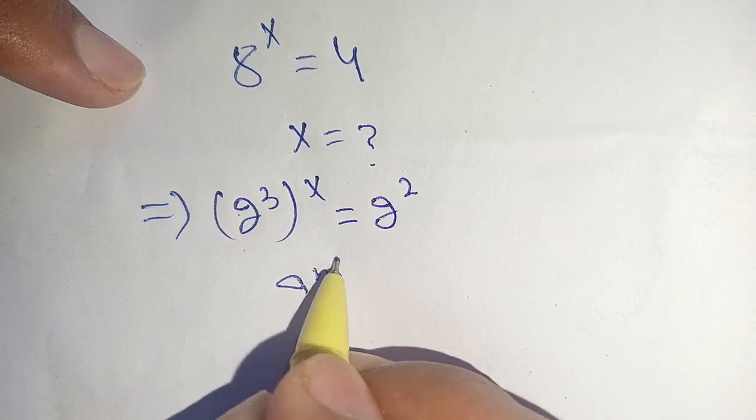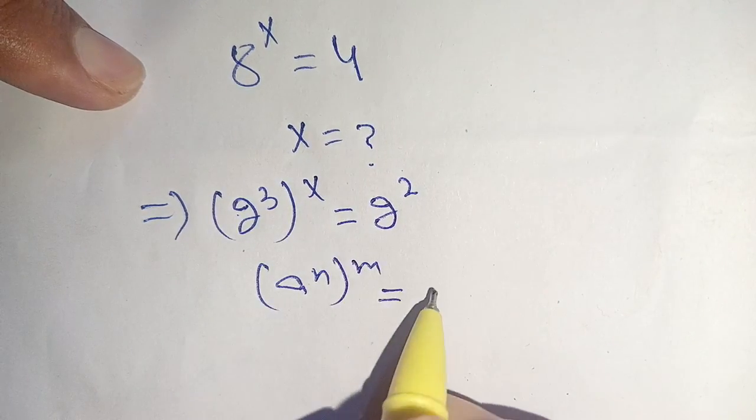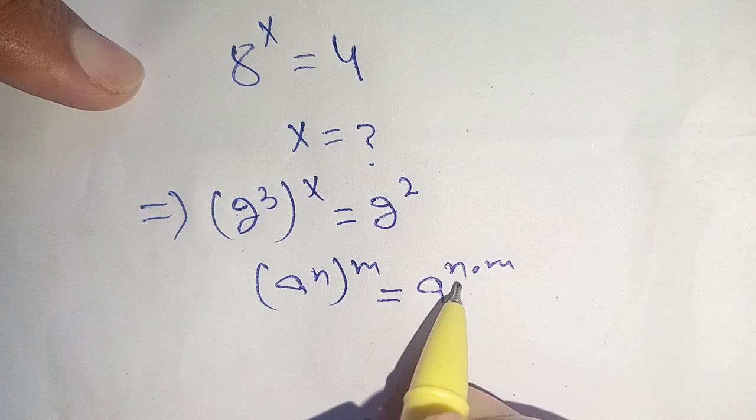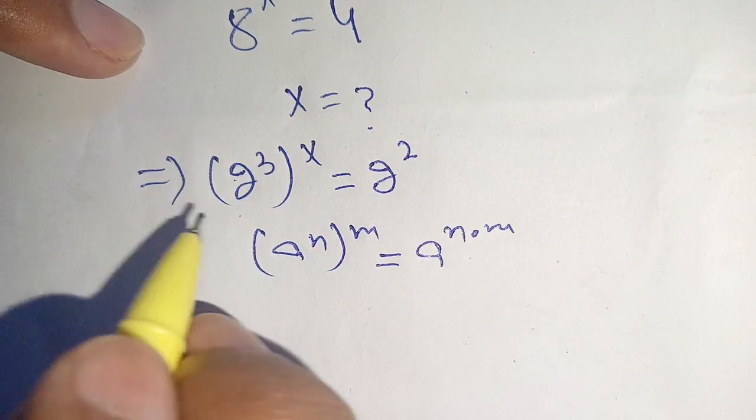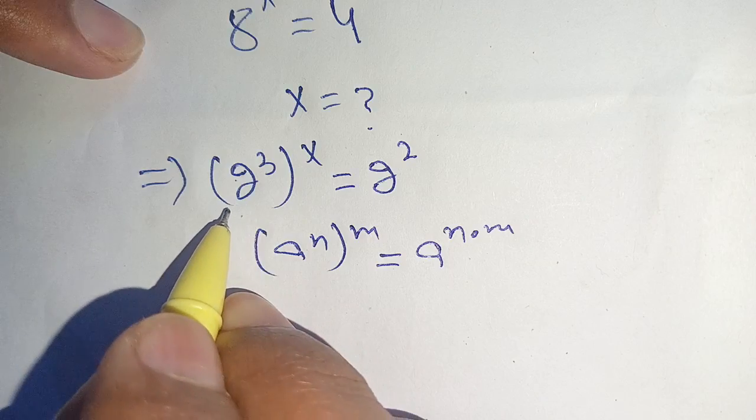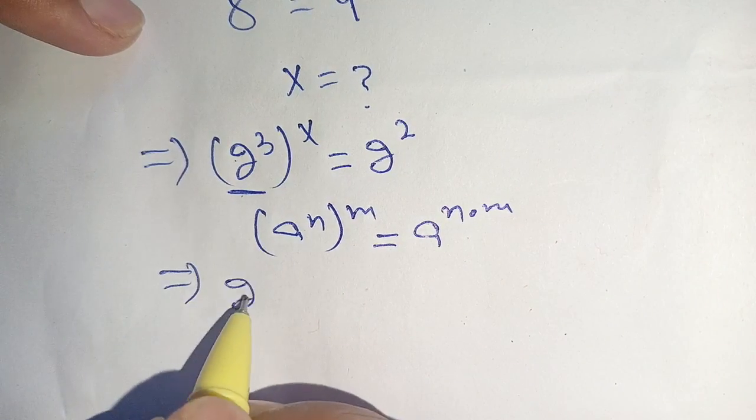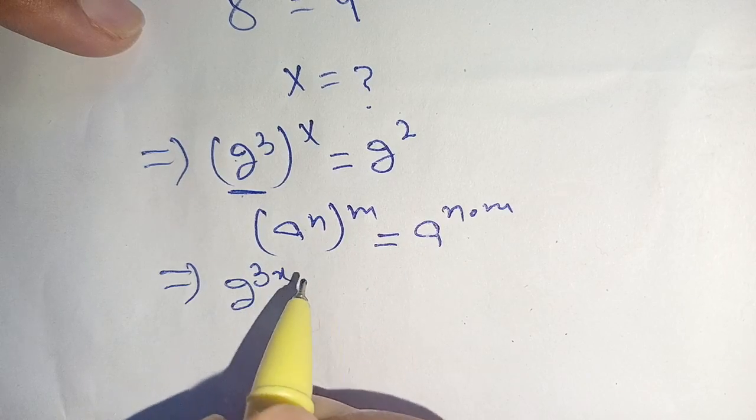Now in the next step, we know that a to the power n in brackets to the power m is equal to a to the power n times m. This means that we multiply its powers. We apply the same identity on the left hand side and we get 2 to the power 3 times x equals 2 to the power 2.